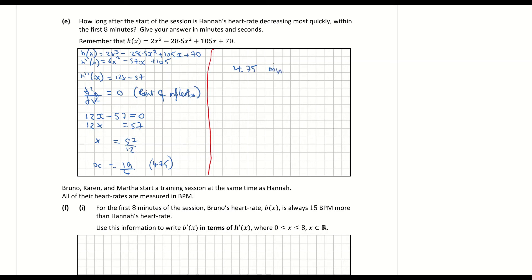The question asks for the answer in minutes and seconds. 4.75 minutes is 4 minutes and 0.75 of a minute. Since 0.75 times 60 equals 45, that gives 4 minutes and 45 seconds.